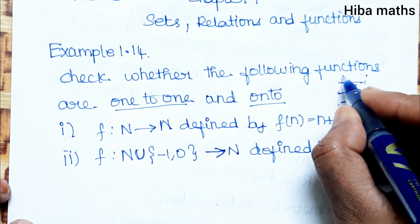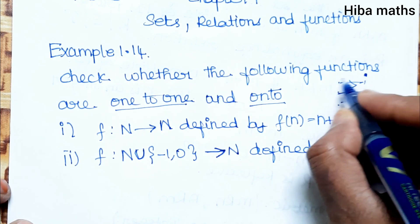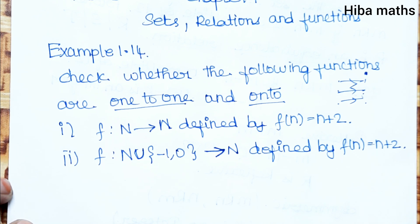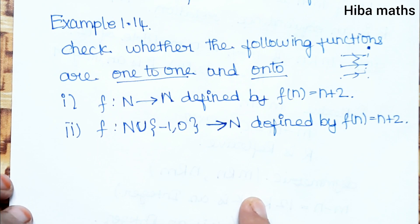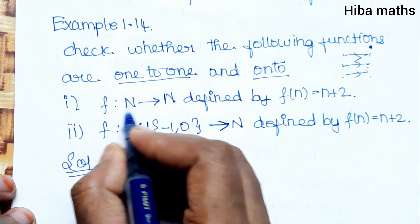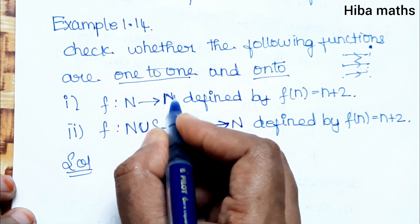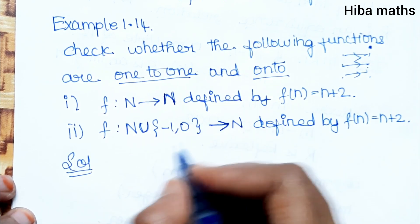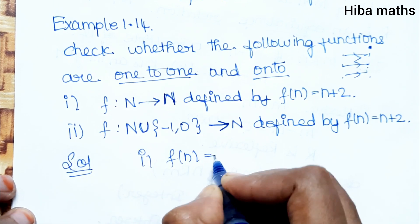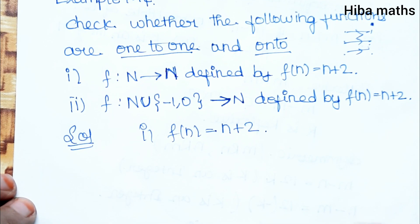First subdivision: f is a function from ℕ to ℕ (natural numbers), defined by f(n) = n + 2. We have four terms to examine.